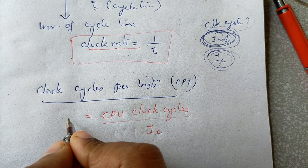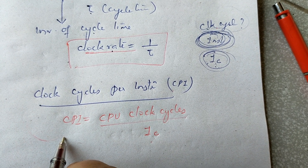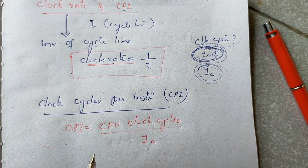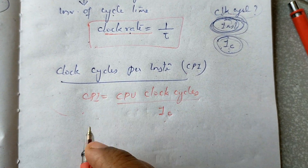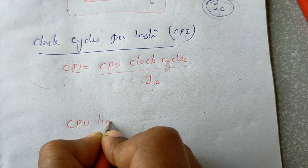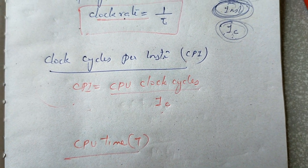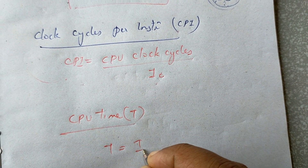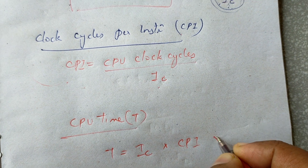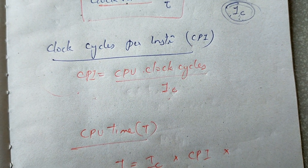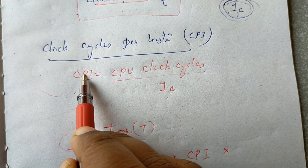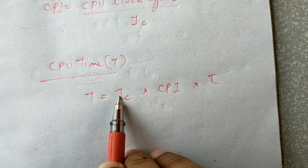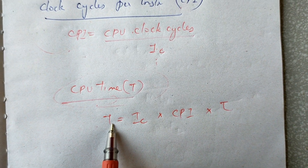CPI is a very important parameter for measuring the time needed to execute each instruction. The performance factor is CPU time T. CPU time is the time needed to execute each program, calculated from the instruction count.